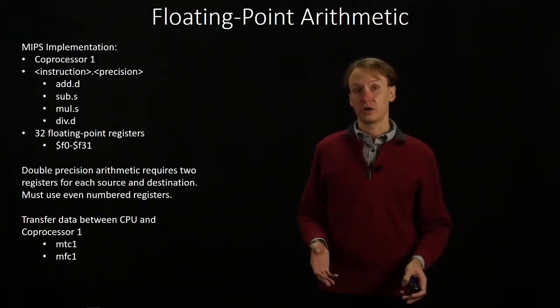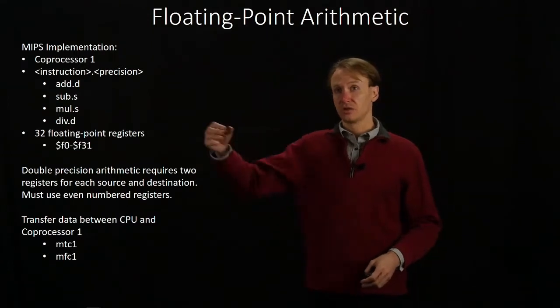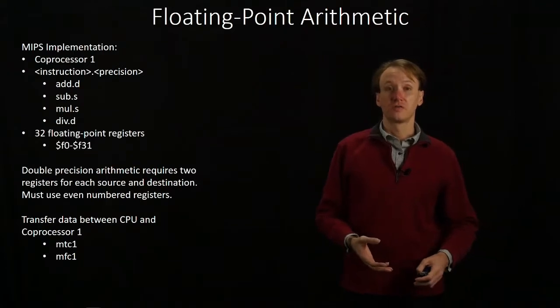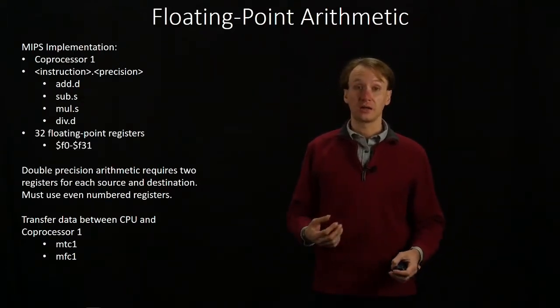If you want to use double-precision operations, then because all of these are 32-bit registers, we're going to need to pull in two registers for each of our sources and our destination.